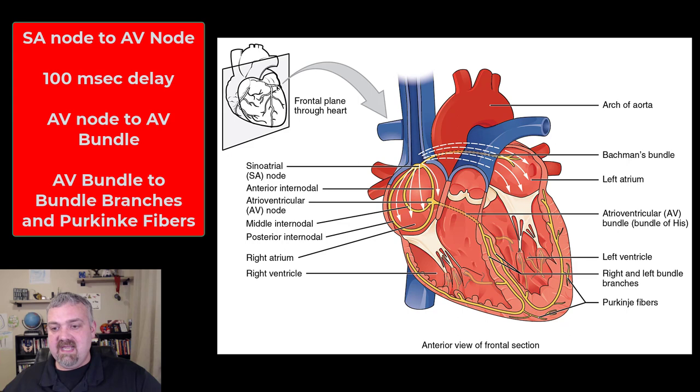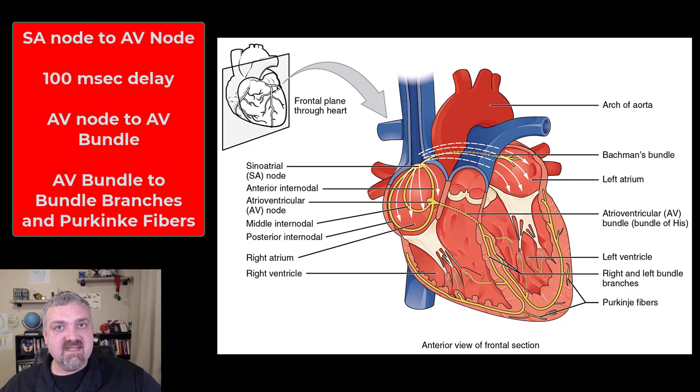I think that's going to be it. Just remember that that's why those Purkinje fibers work their way back up from the bottom. So you wring the heart out from the bottom up and it's much more efficient. You know, next time you brush your teeth, try squeezing the tube of toothpaste in the middle. You'll see it doesn't work very well. Squeeze it from the bottom and it's going to be a much more efficient pump. So that's the conducting system of the heart. I hope this helps. Have a wonderful day.